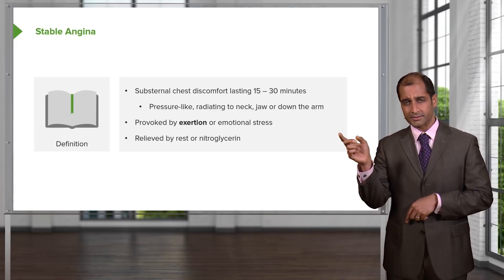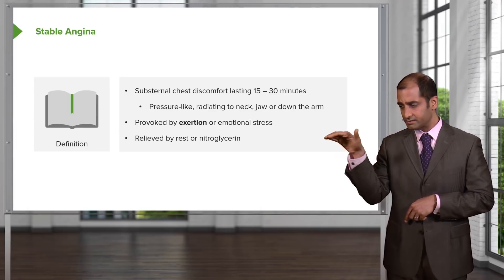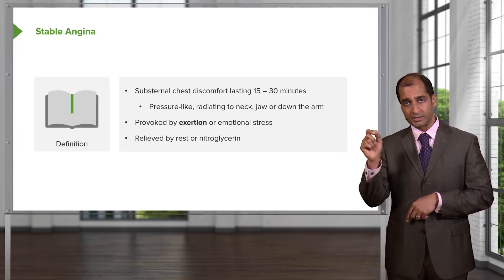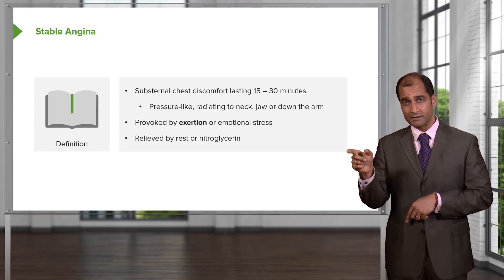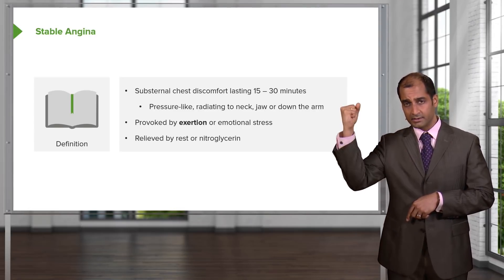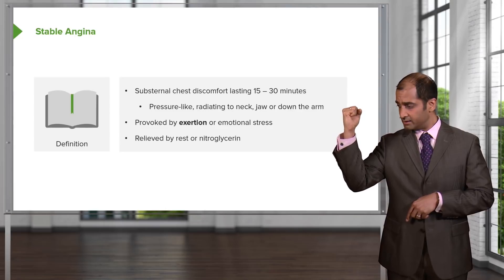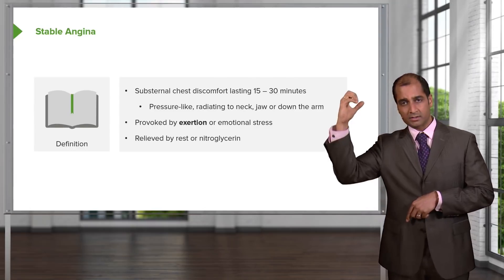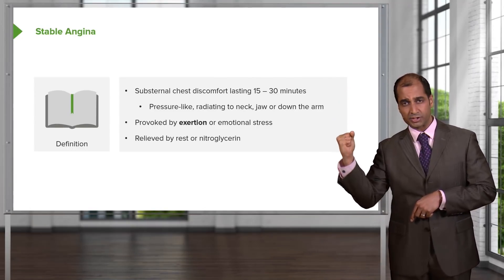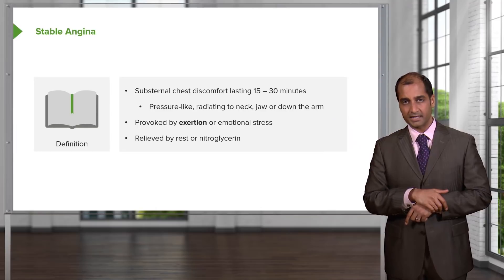Think about the ST segment. Close your eyes. It's isoelectric after your QRS complex, usually flat. When you induce a stress test in a patient who gives you a history of pain upon exertion, you take that ST isoelectric bar and pull it down. It's called ST strain or ST depression.